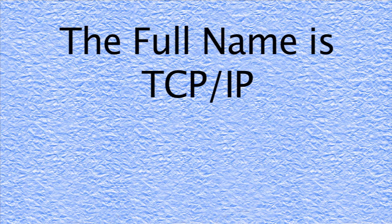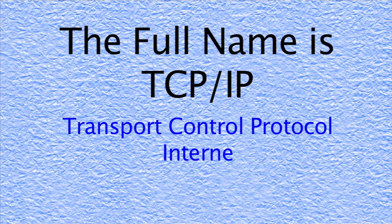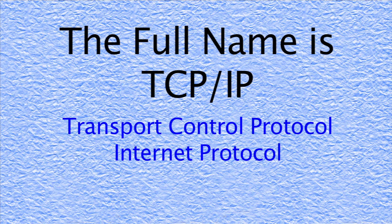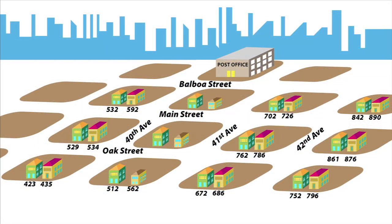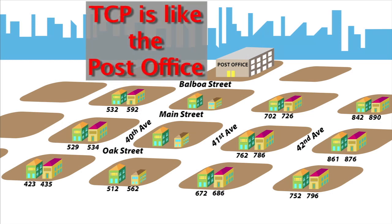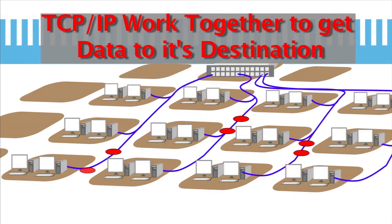The complete suite of protocols is named TCP/IP, where TCP stands for Transport Control Protocol and IP is Internet Protocol. TCP handles the control or flow of data using a number of different protocols, and IP handles addressing and routing of data. Together, they handle all aspects of data flow over and between networks.